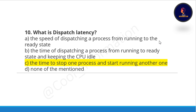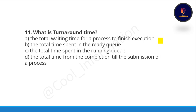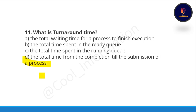The correct option is option C: the time to stop one process and start running another process is called dispatch latency. Question eleven: what is turnaround time? Option A: the total waiting time for a process to finish execution, option B: the total time spent in the ready queue, option C: the total time spent in the running queue, option D: the total time from the completion till the submission of a process.